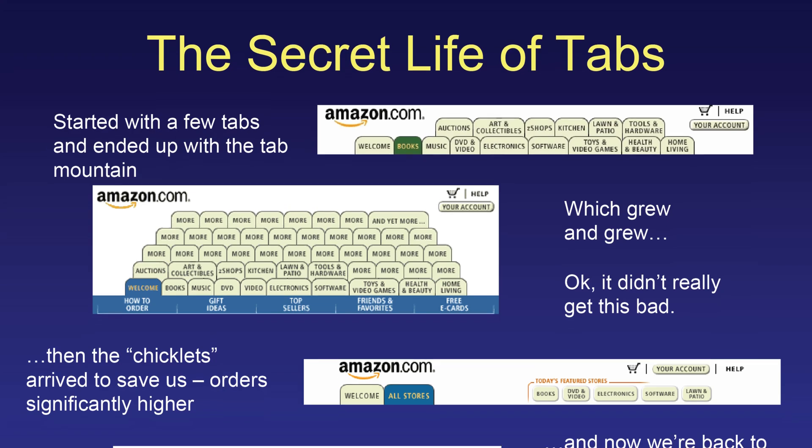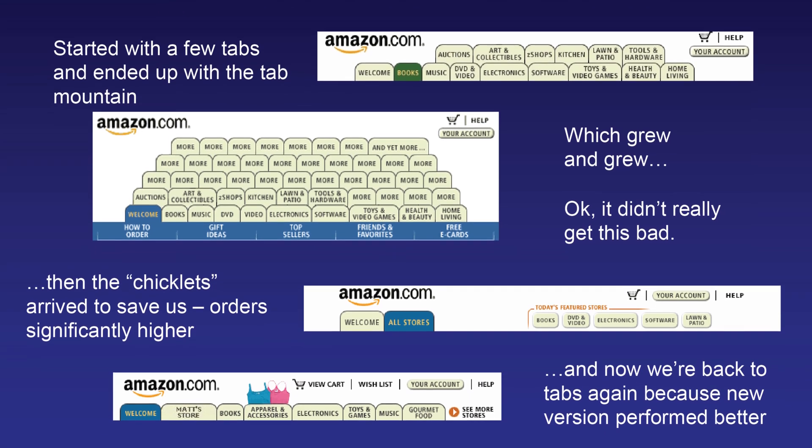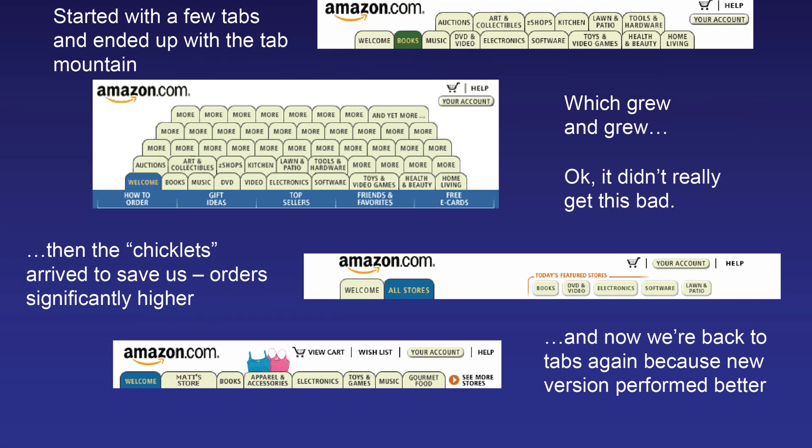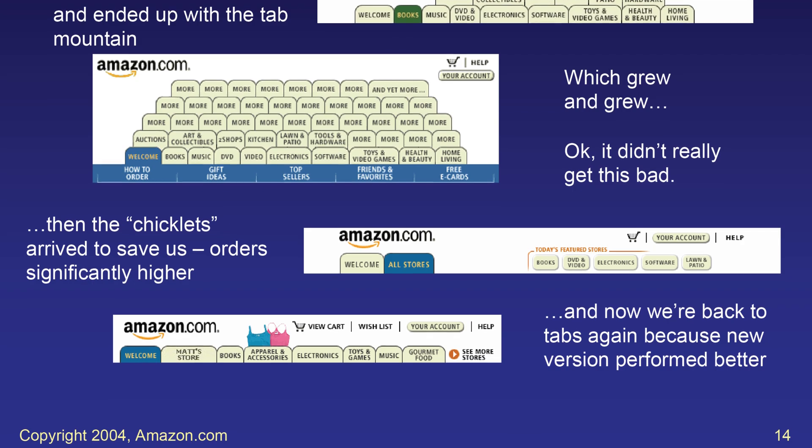A/B testing is used by most websites whenever they make changes to their layout. Amazon repeatedly uses A/B testing — I'll provide a link to a research paper showing how they use it to design product category tabs on the Amazon website. LinkedIn, Facebook, and any apps or websites use A/B testing whenever they want to make a layout change.